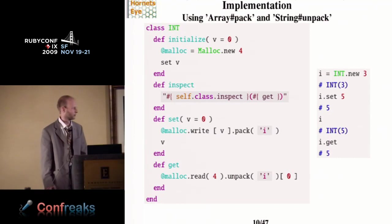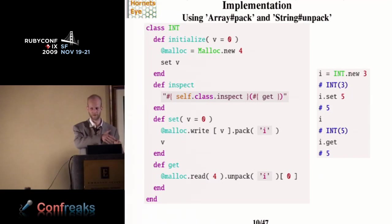And so you can use this class to define a native data type in Ruby. So the constructor, you allocate 4 bytes of memory, and then you have a set and a get method. I don't know, maybe some of you were in the talk earlier on. So you just use a standard Ruby library methods array pack and string unpack to convert a Ruby integer into a 4 byte string containing the native representation of that integer and back. And so then you can write a native integer, and on the right side of the slide is some example use, where you create an integer with initial value 3, and then you set it to 5, and you can read back the value.